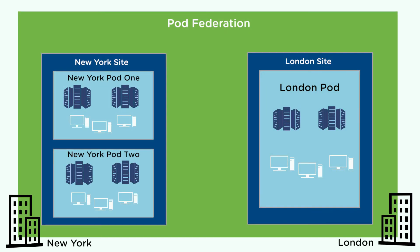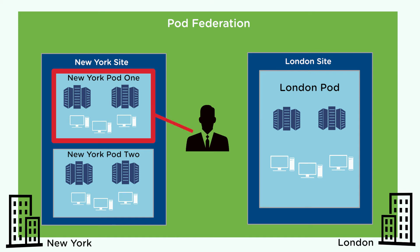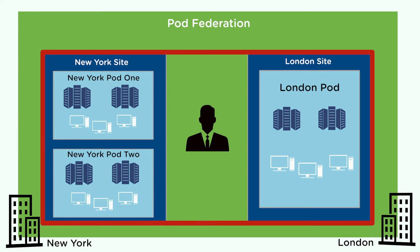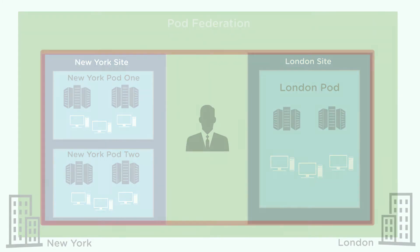When a user requests a desktop or application from a global entitlement, Horizon 7 searches for an available desktop or application in the pools in the global entitlement. To satisfy a desktop or application request, Horizon 7 searches local resources first, starting in the pod that the user is connected to. Horizon 7 then extends the search to resources in the same site, and finally searches for resources across the entire pod federation.